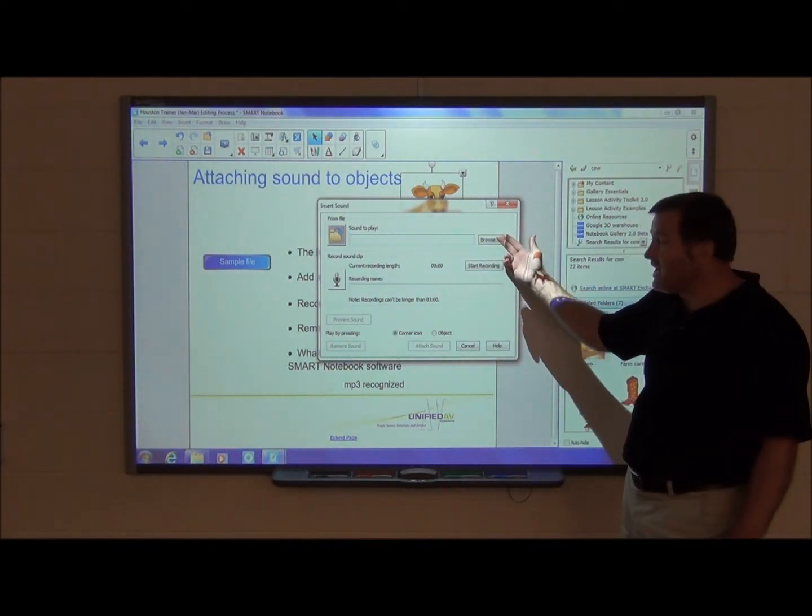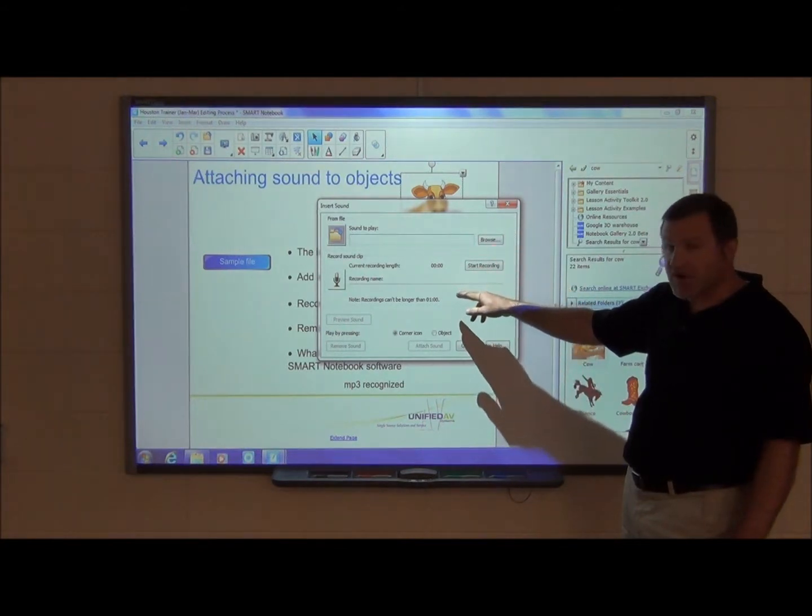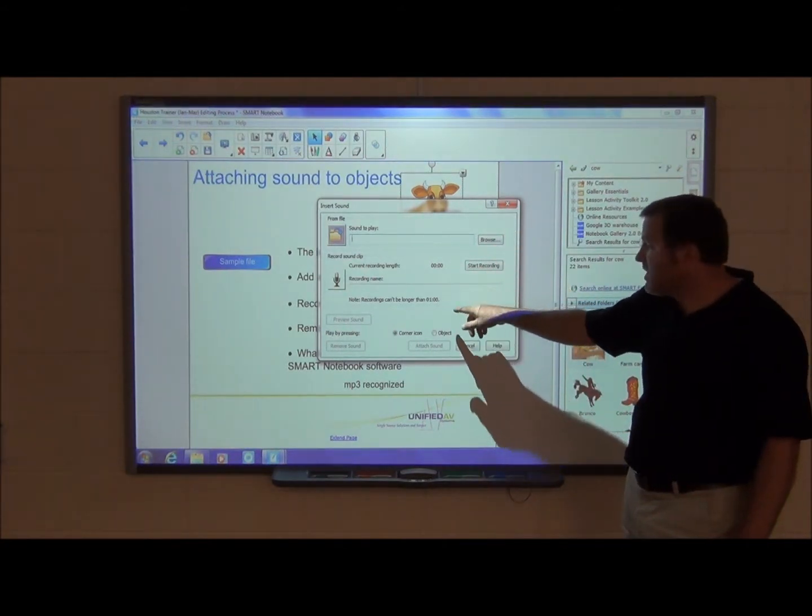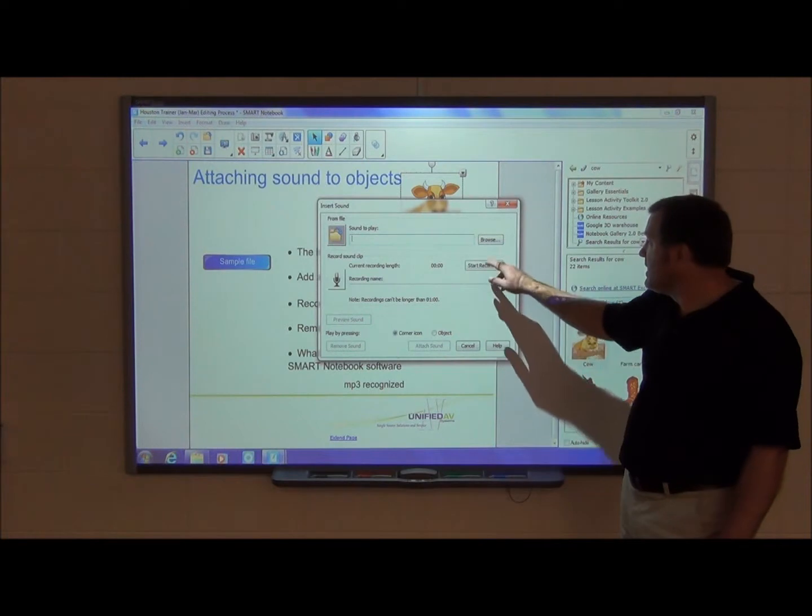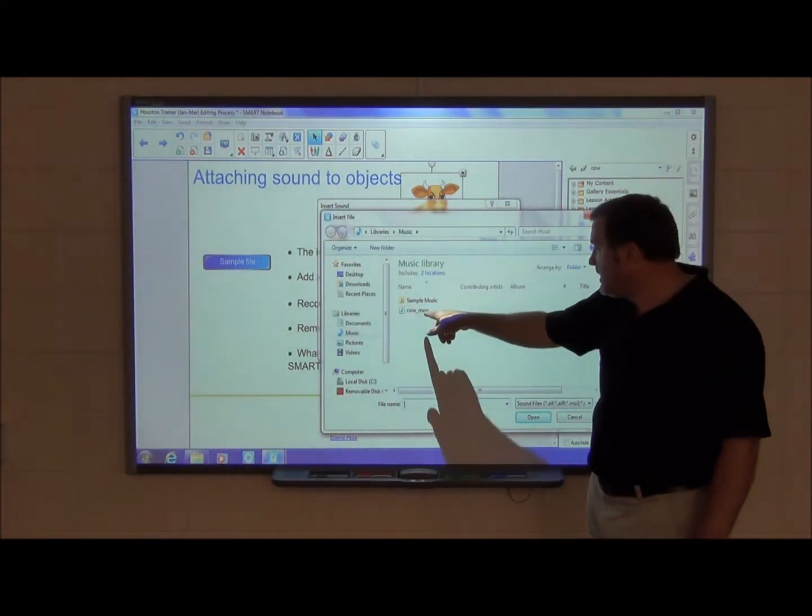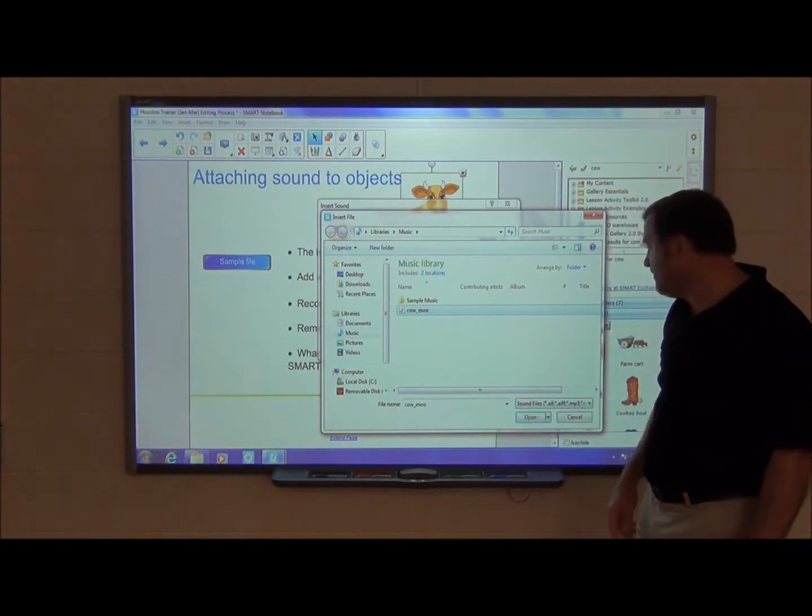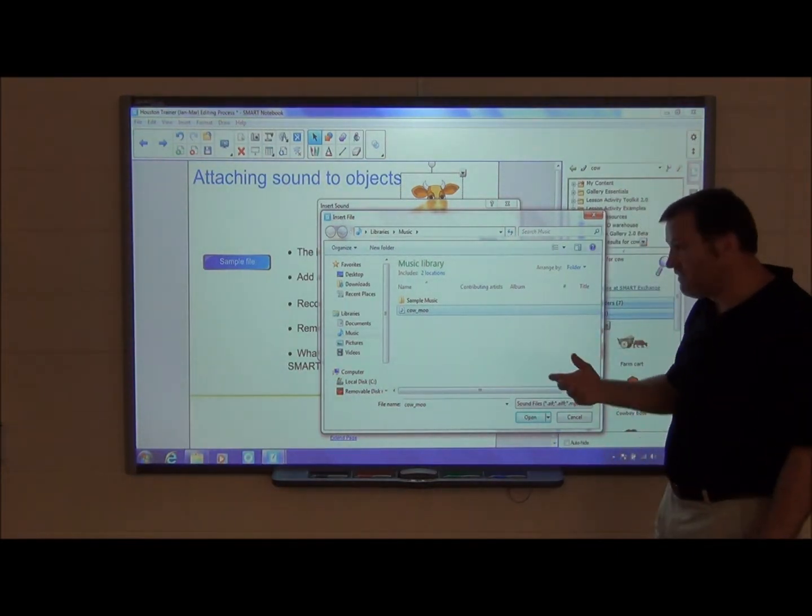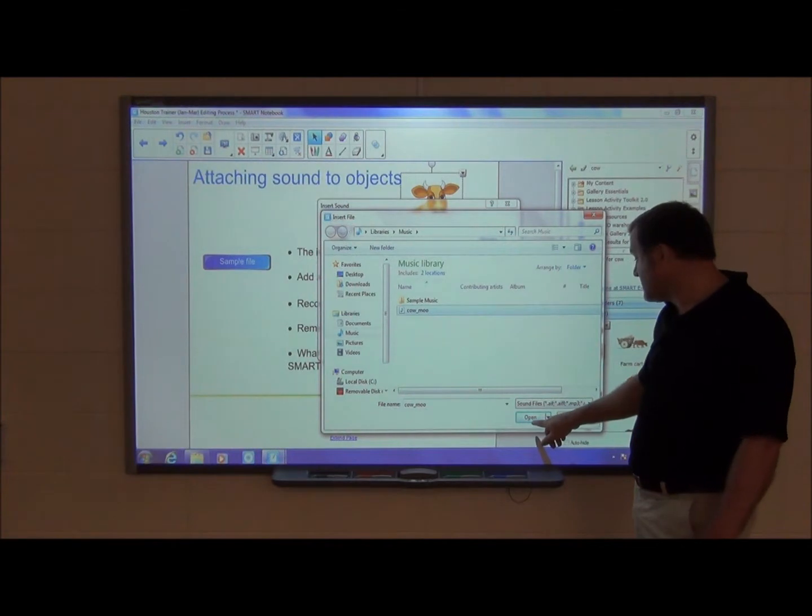You can browse on your computer and find a sound. If you have a microphone you can also record your own sound up to one minute in length. So I'm going to press browse. I'm going to go to a file I already have and it is the moo sound for a cow. Notice it is an mp3 file. That's the only files you can use to insert sound.